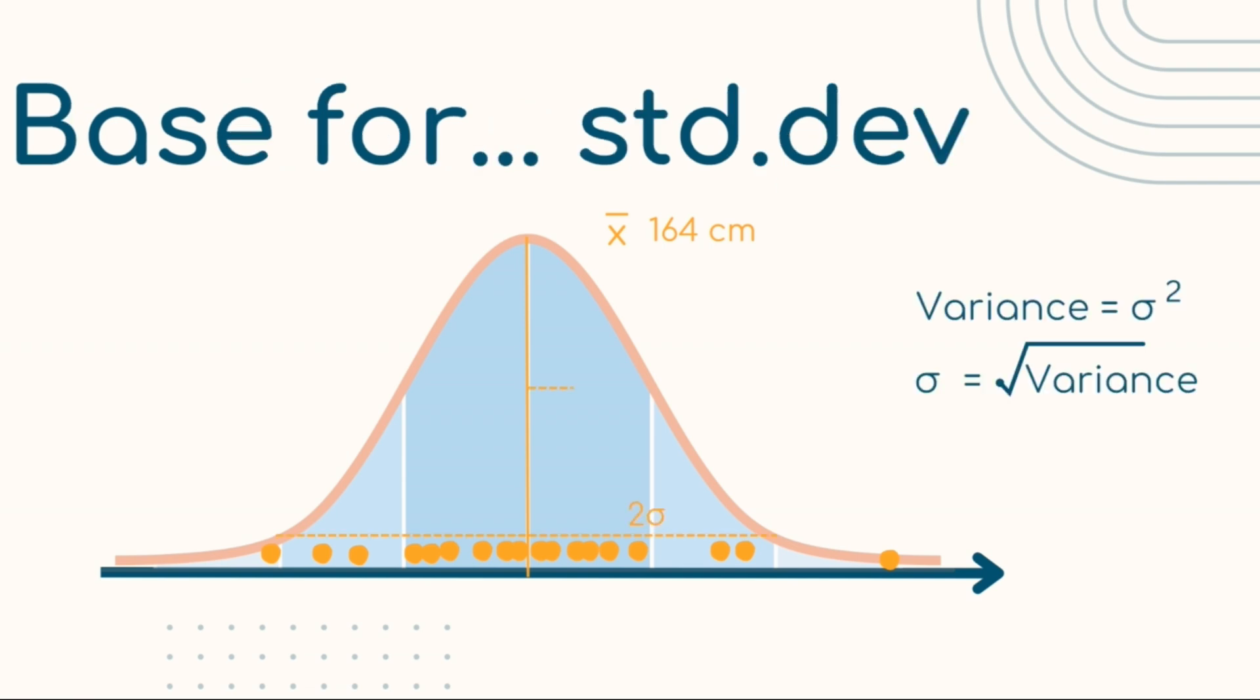Variance will always be positive. It allows the formulation of other metrics that derive from it, like for example the standard deviation, which is nothing else but a unit of length like kilometers or miles, but for measuring the distance from the mean inside the distribution. So my height of 173 cm would be in the right tail of this distribution, 2.5 standard deviations away from the mean.